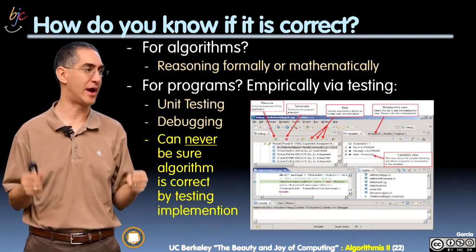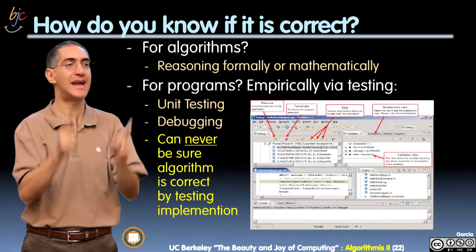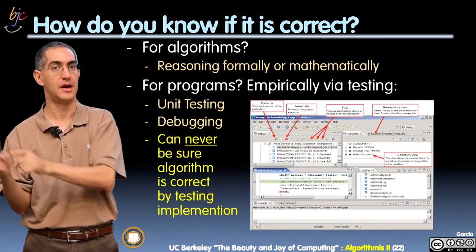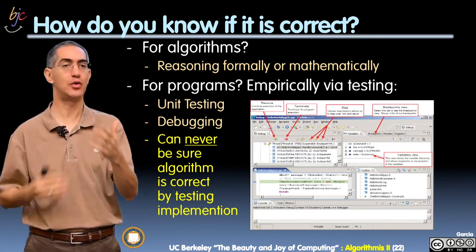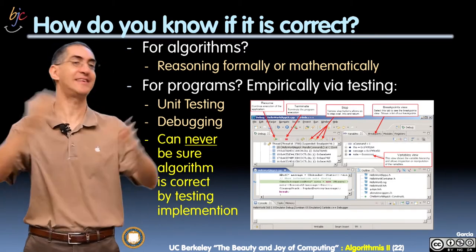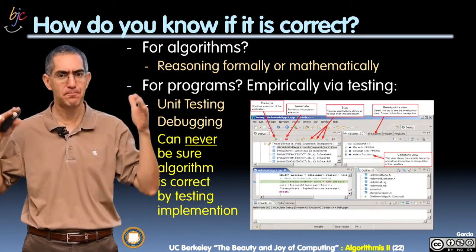How do you know it's correct? For algorithms, you have to mathematically reason about them. For code, actual implementations of the algorithm, you could do testing, and you could do a lot of testing. Can you ever prove it's perfectly working?